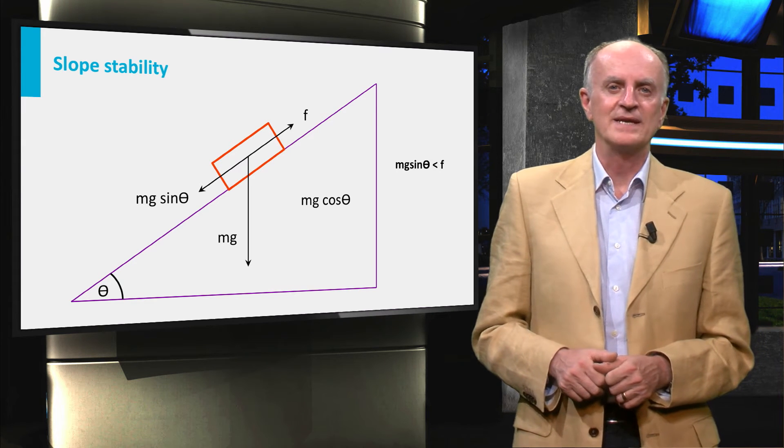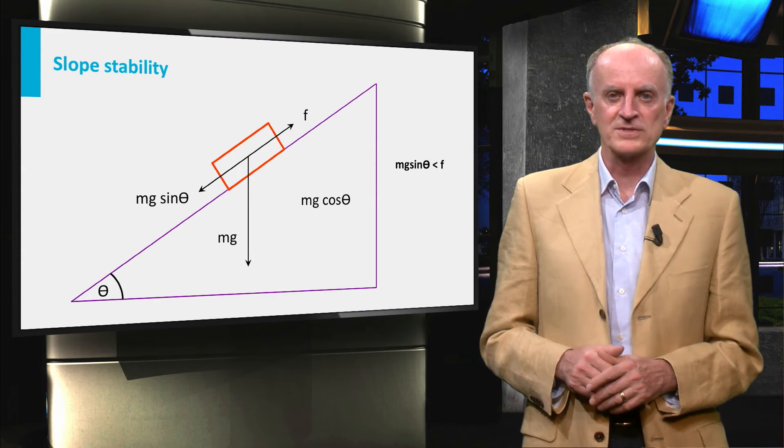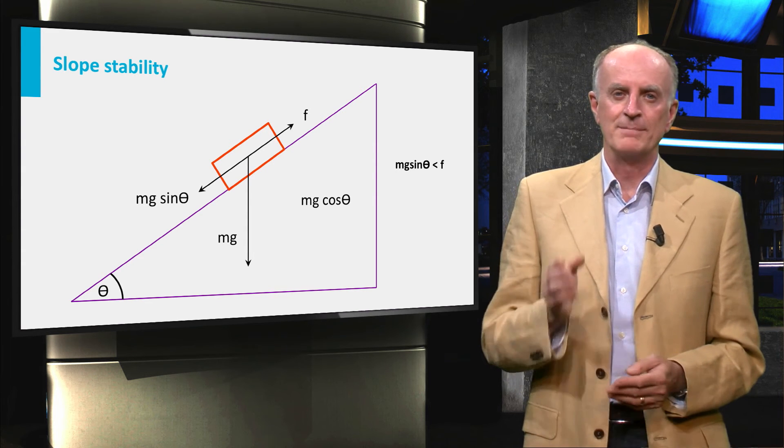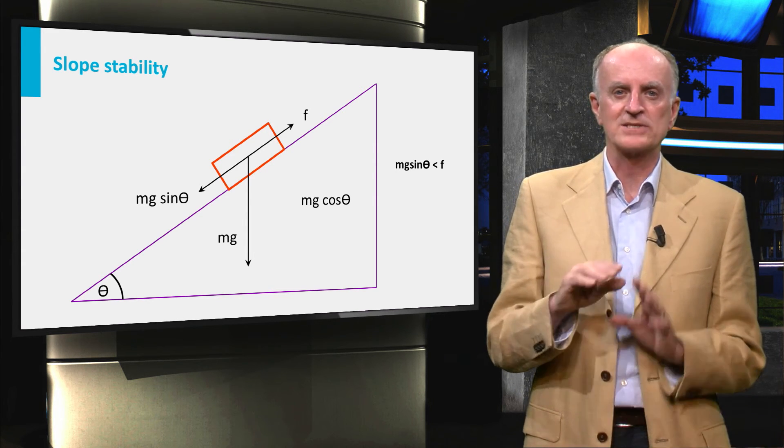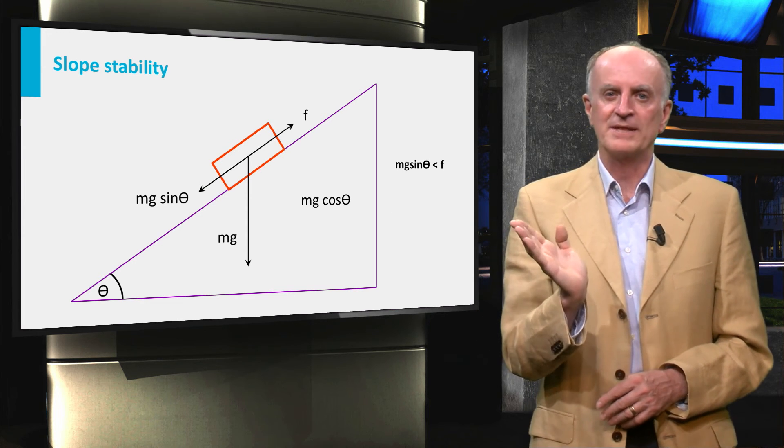A key issue of mass wasting is obviously that of the stability of the slopes. The first-order physics is simple. The blocks on the slope are stable as long as the component of gravity along the slope is smaller than the friction at the base.